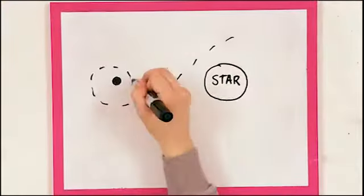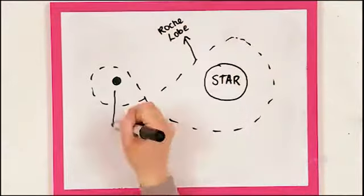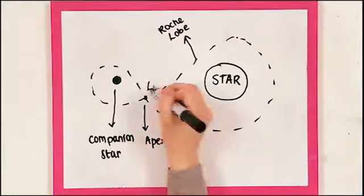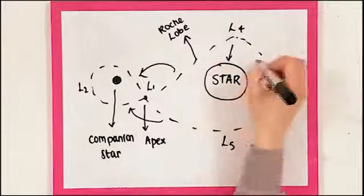It is an approximately teardrop-shaped region bounded by a critical gravitational exit potential with the apex of the teardrop, the pointy bit, pointing towards the other star.